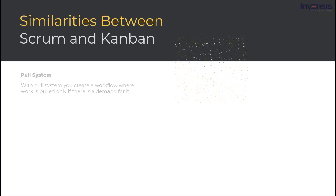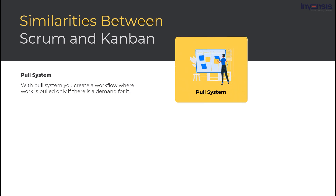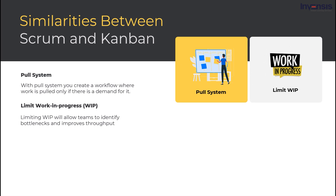Both of these frameworks are based on so-called pull scheduling, which ensures that a quality product is delivered to the customer in the shortest possible time. Applying a pull system allows you to start new work only when there is customer demand for it. The main aim is to build products based on actual demand and not on forecasts. By doing so, your company can focus on eliminating waste activities in the production process. Both Scrum and Kanban platforms tend to limit the work-in-progress. They put strict limits on the amount of work-in-progress at any given time. Limiting work-in-progress makes bottlenecks visible and improves throughput — it's just that how they do it is different.